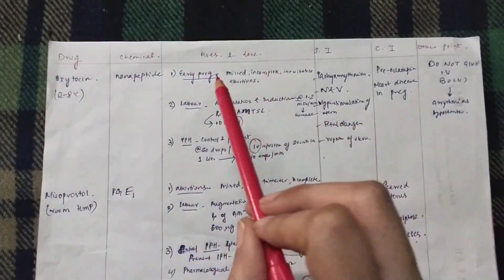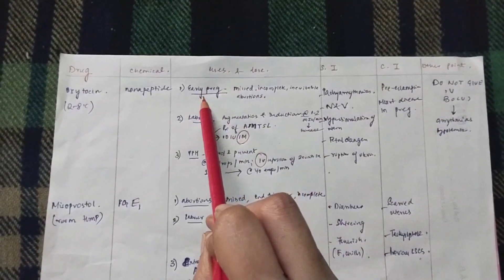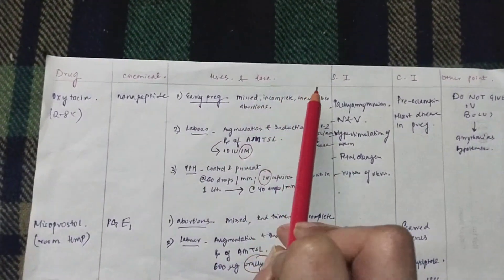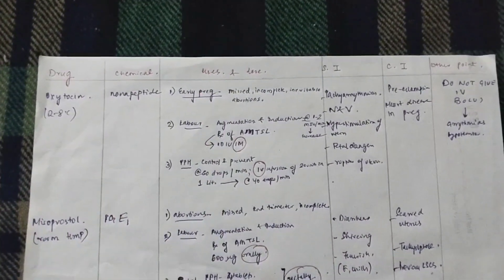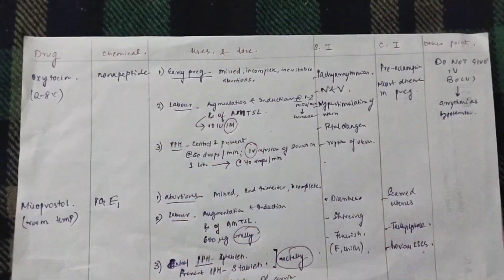So, oxytocin. As I told you, they are used in abortions, labor, and PPH. Abortions, early pregnancy abortions. In almost all types of abortions, like missed abortions, incomplete abortions, inevitable abortions, they are used. Because oxytocin, you know, that they will increase the uterine contractions, and hence they are helpful in abortions.